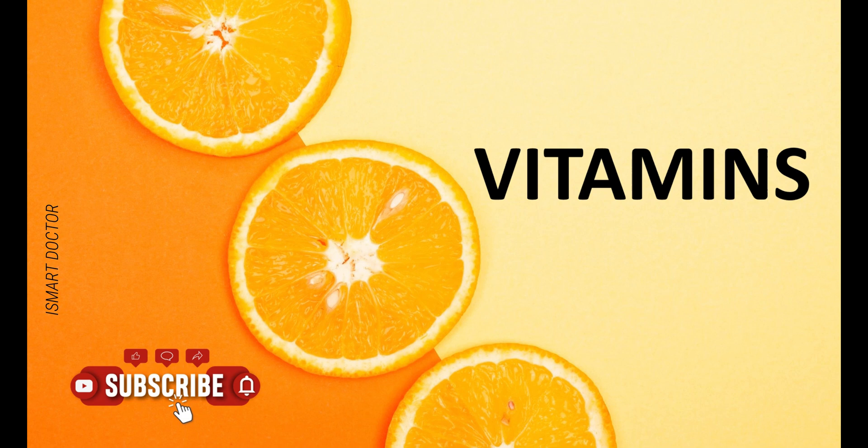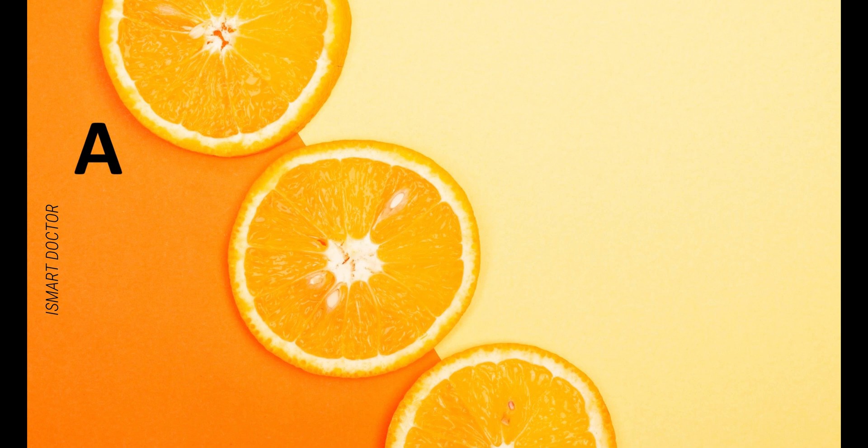We have vitamins in general. In English, we have Vitamin A, which is retinol, and Vitamin B. For Vitamin B, we have different levels: B1, B2, and so on. We have the Vitamin B complex.